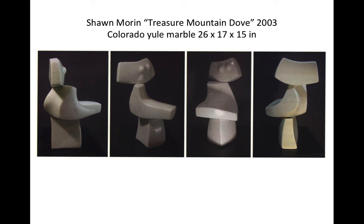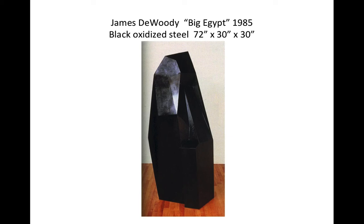Looking at this sculpture, you can see that it's dealing with weight — it almost gives you a feeling like the top piece is going to fall off any minute. This is a metal piece. You can see the shapes here: this is going in, this is moving out — this is what we call a tectonic form, it has a solid mass. You can see this form jets out, so we have concave forms and convex forms. It's non-organic, more geometric in format.